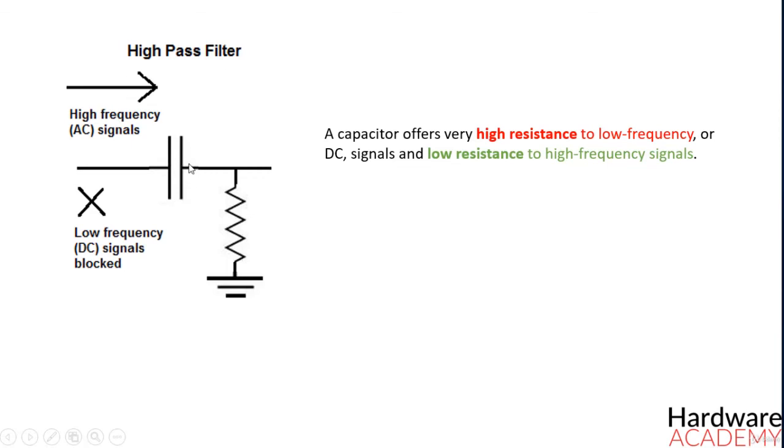Because capacitors offer very high resistance to low-frequency or DC signals, it means that the signal trying to pass through it will be blocked. So this type of filter only allows high-frequency AC signals to pass through and not DC.